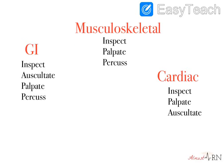For musculoskeletal, we inspect, palpate, and percuss. If you notice, there's no auscultation — there's nothing we need to listen to. For cardiac, we inspect, palpate, and auscultate. We do not percuss in cardiac assessments. So although you may not need to memorize a specific order generally, when talking about certain focused assessments, there is a specific order.